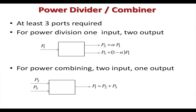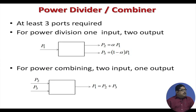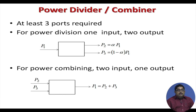In the next five lectures, we will cover passive circuit components. This lecture starts with microwave power dividers — how to divide or combine signals. If we want to divide power, we require at least one input and two outputs, so at least three ports are required. P1 is the input power; an alpha fraction goes to port 2 and the remaining (1 minus alpha) goes to port 3. This is a lossless divider. Similarly, for a power combiner, two signals P2 and P3 are combined so that the output is the sum of the input powers.